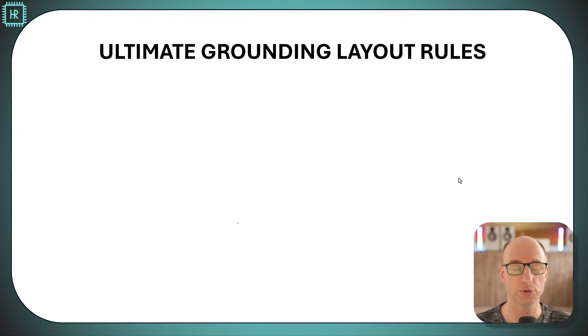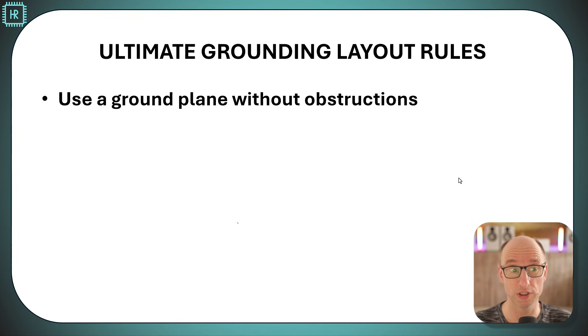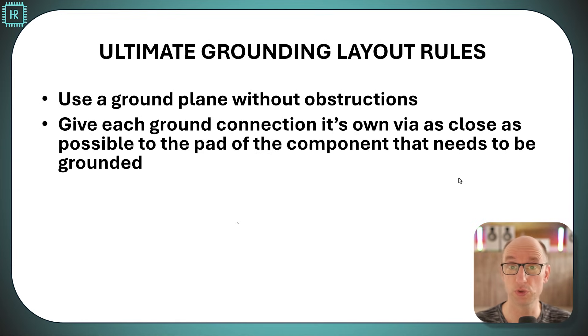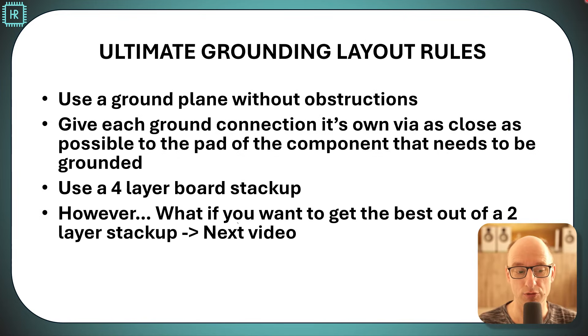Based on everything we've seen now we can show the ultimate grounding layout rules. Rule number one: Use a ground plane without obstructions. Rule number two: Give each ground connection its own via as close as possible to the pad of the component that needs to be grounded. And three: Use a four layer board stack up. Now four layer boards are a little bit more expensive than two layer boards. So what if you want to get the most out of your two layer board? That's something I want to look at in the next video.